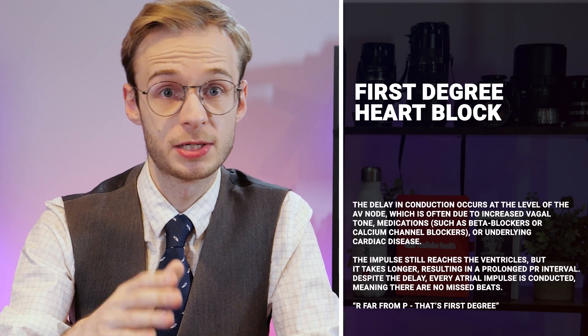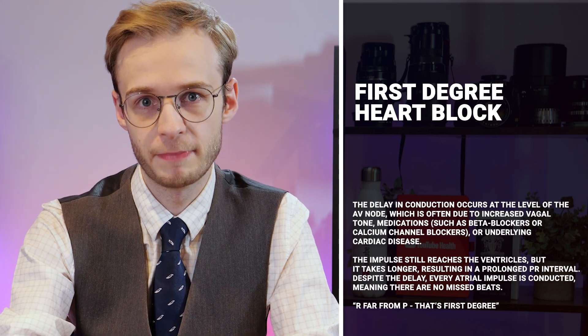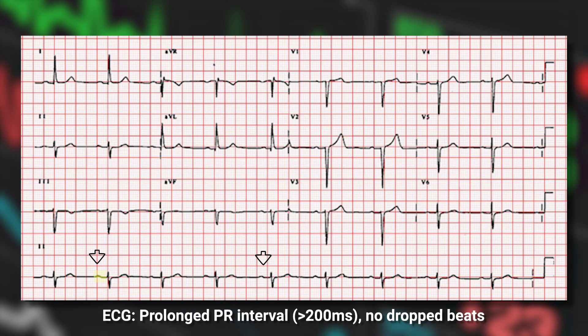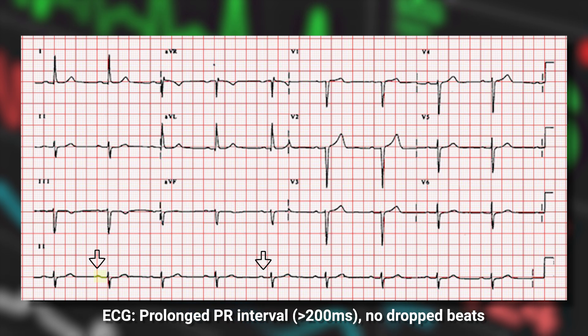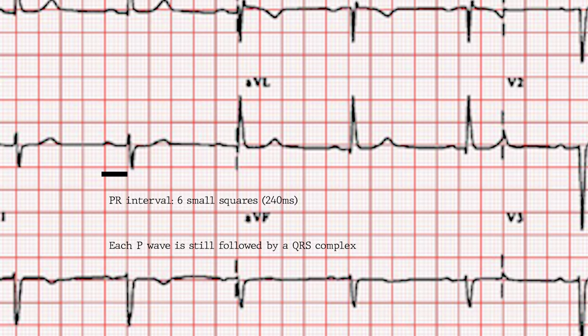Now the heart blocks. In first degree heart block, the delay in conduction occurs at the AV node. This can happen due to increased vagal tone, medications like beta blockers, or underlying cardiac disease. Crucially, the impulse is still reaching the ventricles — it's just taking longer. On the ECG, we see a prolonged PR interval with no dropped beats, indicating delayed but eventual conduction from the atria to the ventricles.